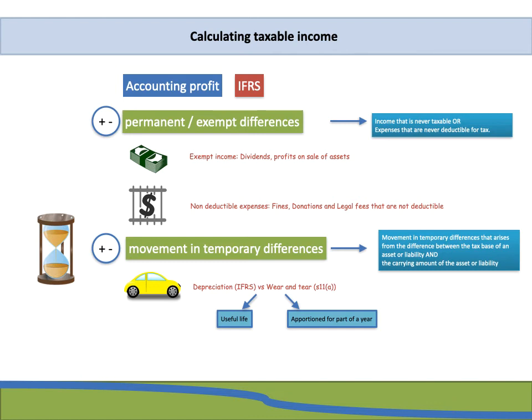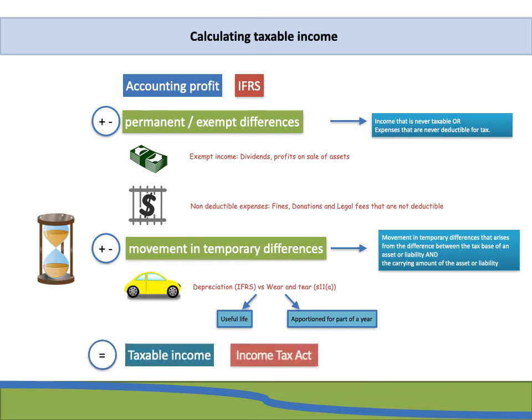Once you've deducted your movement in temporary differences, this gives you your taxable income as per the Income Tax Act. We started with accounting profit according to IFRS rules, then adjusted for all items that have different tax effects compared to what accounting says.